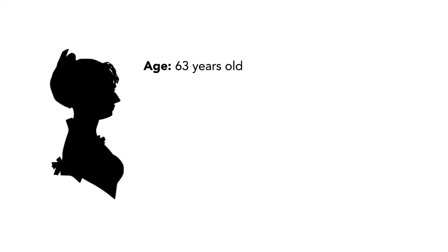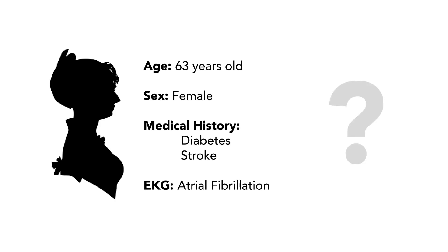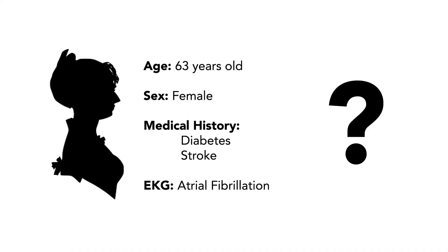Here's an example. You have a 63-year-old female with diabetes and a history of stroke 2 years ago. She's been complaining of palpitations for the past 3 days. An EKG shows atrial fibrillation. How would you re-stratify this patient's risk and need for antithrombotic therapy?